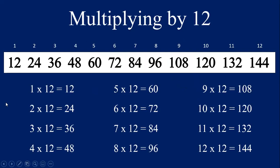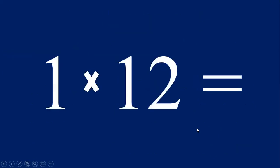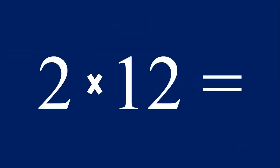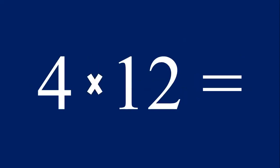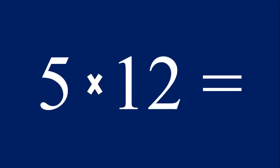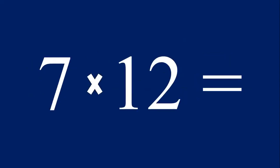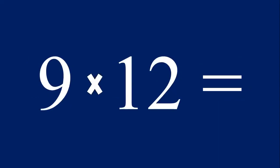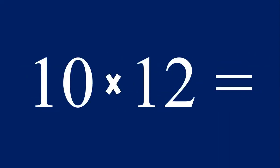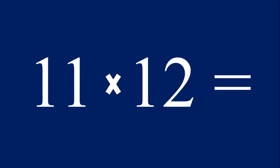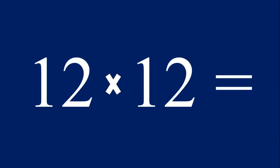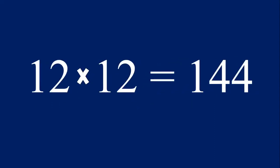Now let's practice our last set of equations, multiplying one through twelve by the number twelve. One times twelve equals twelve, two times twelve equals twenty-four, three times twelve equals thirty-six, four times twelve equals forty-eight, five times twelve equals sixty, six times twelve equals seventy-two, seven times twelve equals eighty-four, eight times twelve equals ninety-six, nine times twelve equals one hundred and eight, ten times twelve equals one hundred and twenty, eleven times twelve equals one hundred and thirty-two, and twelve times twelve equals one hundred and forty-four.